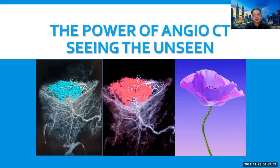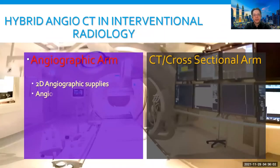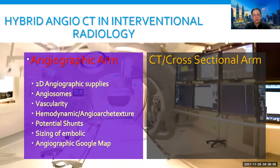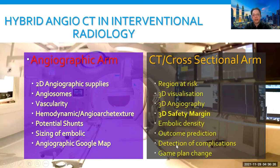I would like to show you the power of Angio CT in seeing the unseen. In the hybrid Angio CT system, we have two arms. The angiographic arm offers us the 2D angiographic study — the angiogram, the vascularity, the hemodynamics, the angioarchitecture, as well as potential shunts and sizing of embolic agents — and the angiographic Google Maps capability. The CT arm provides us with region-at-risk identification, 3D visualization, 3D angiography, 3D safety margin assessment, embolic density outcome prediction, and complication detection.